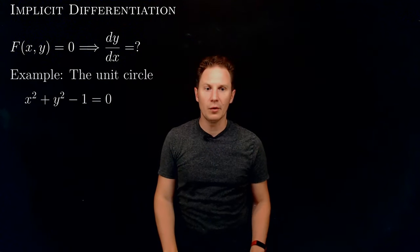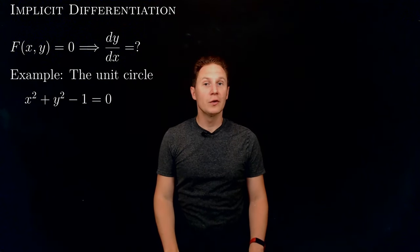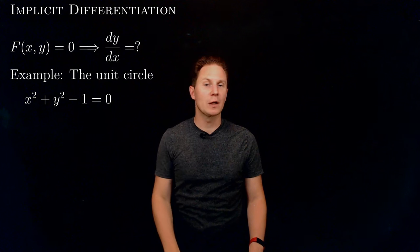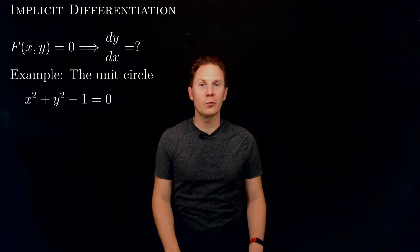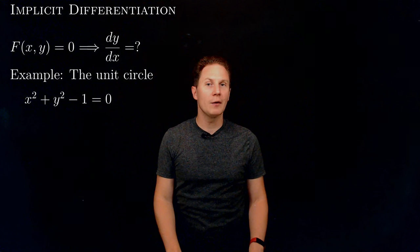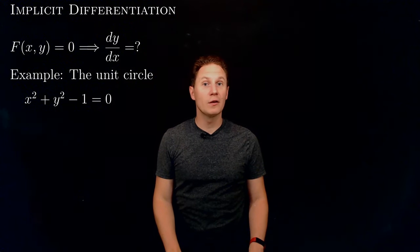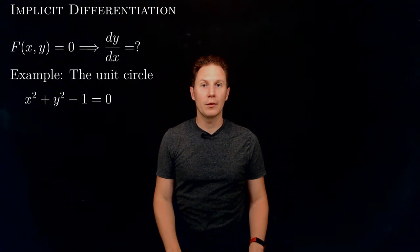Let's see an example. Consider the unit circle in the xy plane. It's given by the equation x squared plus y squared minus 1 equals 0. Think about how you would differentiate y with respect to x using this equation. Pause the video and think about it.